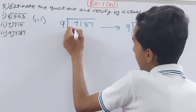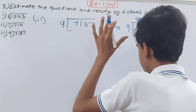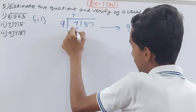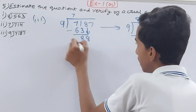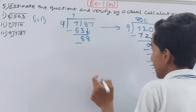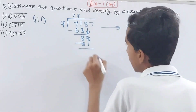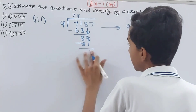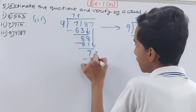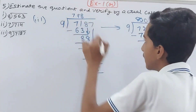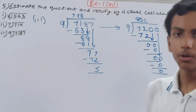For the actual: 9 into 7 — take 63, that's 7 times. Bring down 8, giving 88. 9 into 9 is 81, so 9 times. Bring down 7, minus 72, remainder 5. Actual quotient is 798 remainder 5.